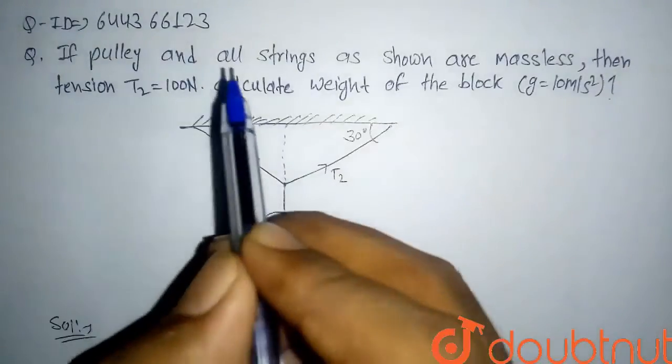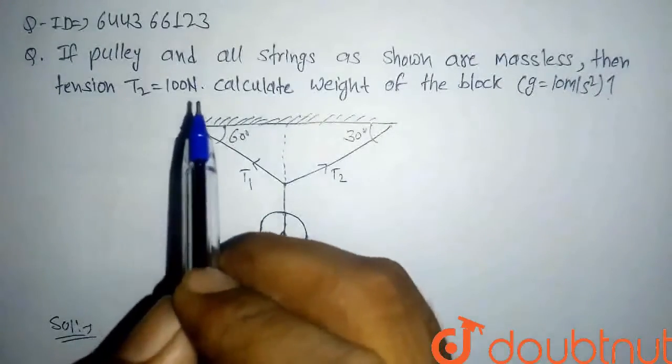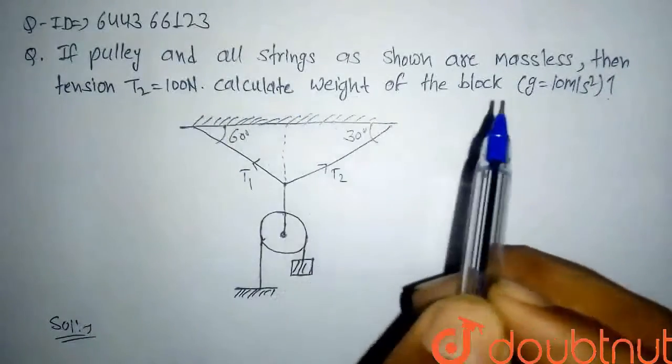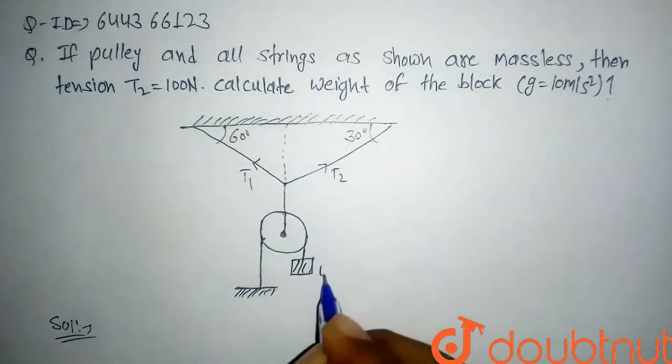If pulley and all strings as shown are massless, then tension T2 equals 100 Newton, calculate weight of the block. So here we have to find the weight of the block. Assume that the weight of block is w.